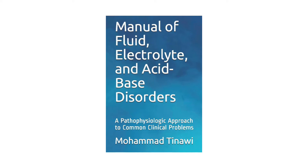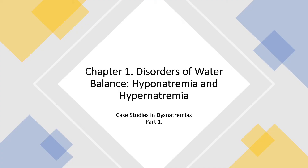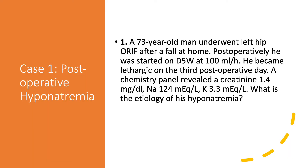This is the book. You can find it on Amazon — it's available as an e-book and also as a paperback. More information you can find in the description. We are still on Chapter 1, Disorders of Water Balance: Hyponatremia and Hypernatremia. Now we've reached the fun part. We've done explaining hyponatremia and hypernatremia in considerable detail, and now we are going to case studies in dysnatremias — this is part one. Let's get started.